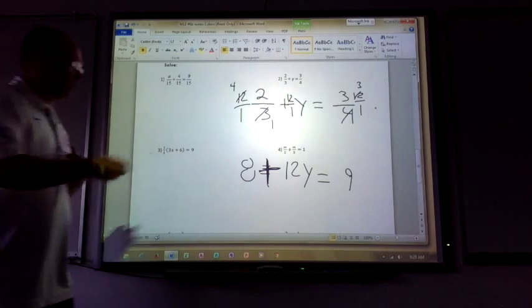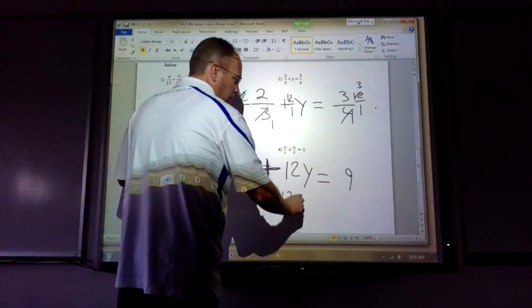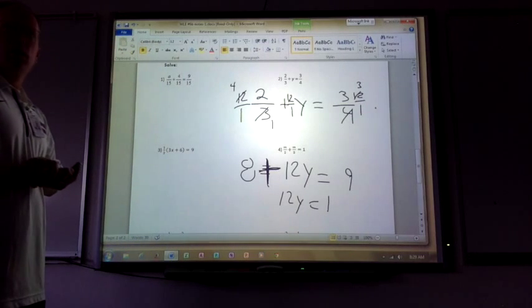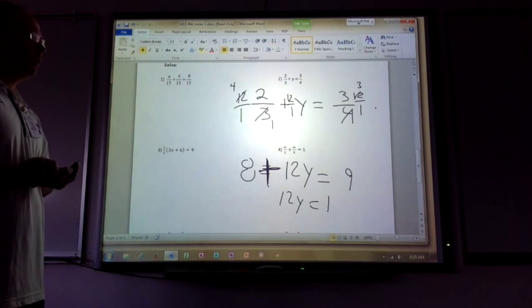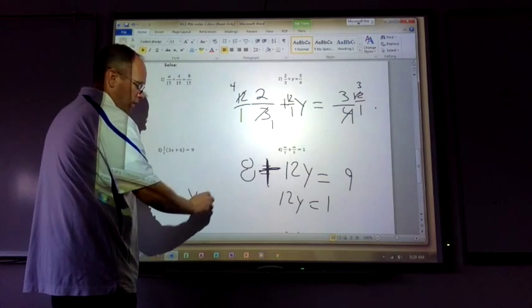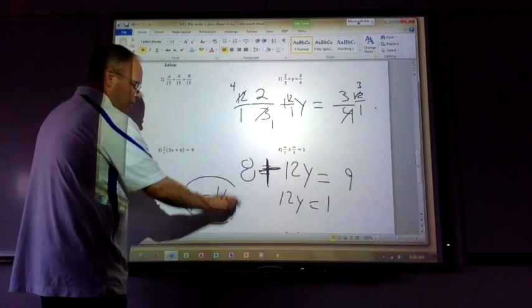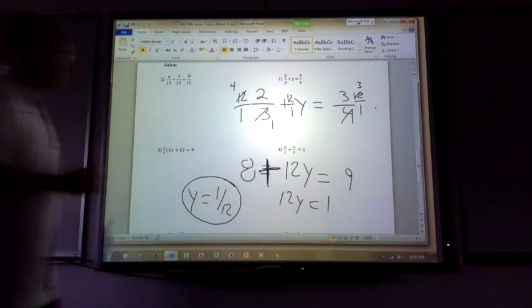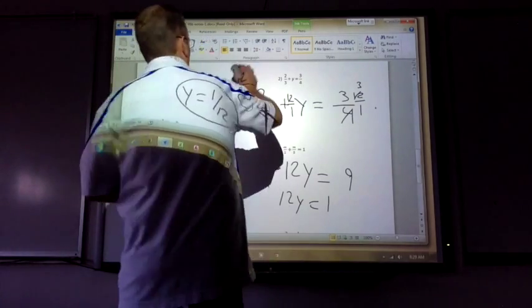Subtract eight. Subtract eight from both sides? OK. What's my answer going to be? No. 1 over 12. So you're dividing both sides by 12, so you get 1 over 12. Perfect. Does that look OK? Sweet. Can I erase?